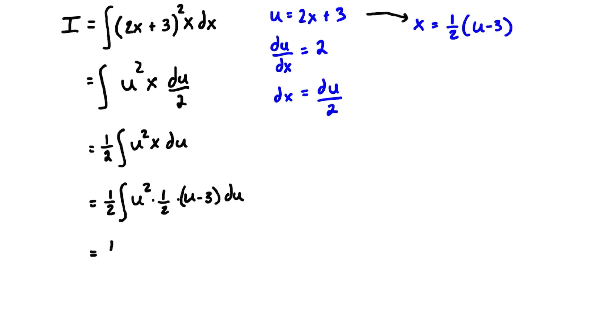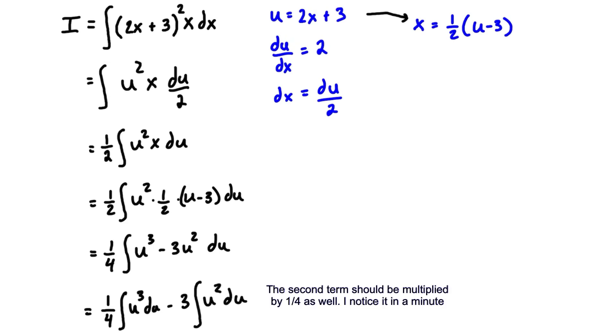We can bring out that half again, so we have ¼ times the integral of u³ - 3u², all du. When you have situations like this where we're taking the integral of two separate terms, it's generally easier to separate it into each term into its own integral. So let's write that as ¼ times the integral of u³ du minus ¾ times the integral of u² du.